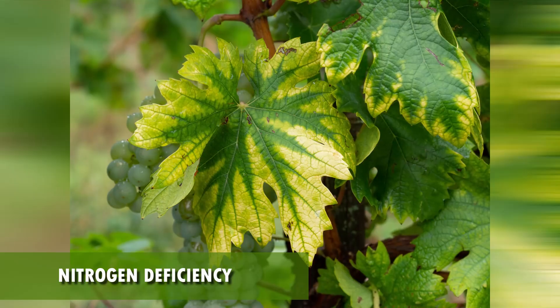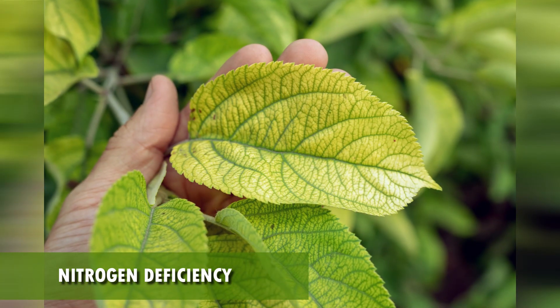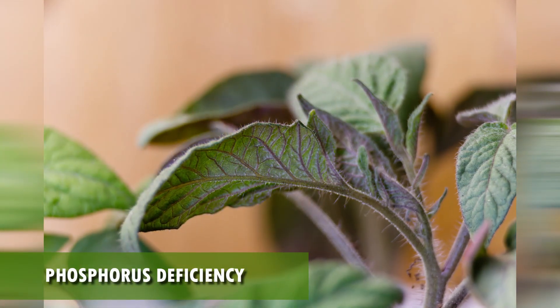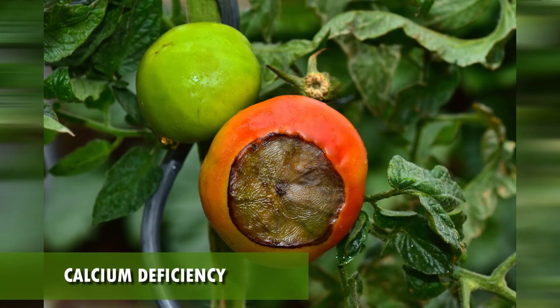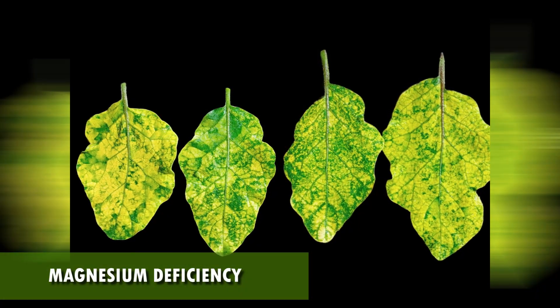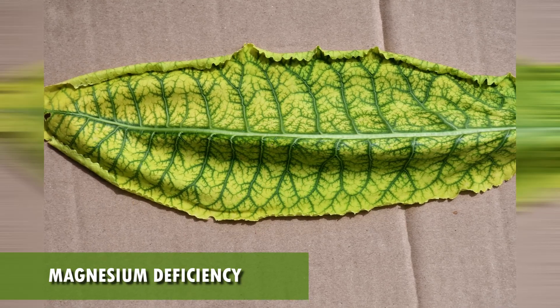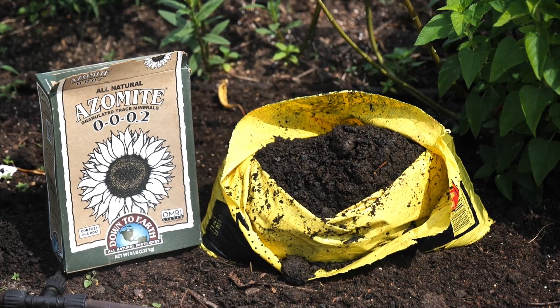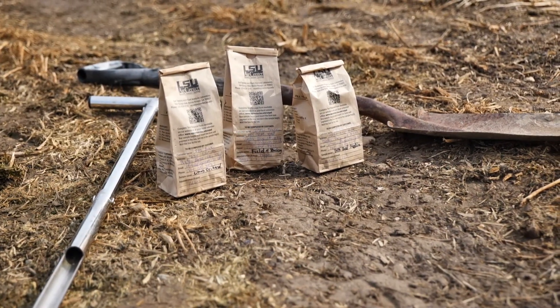Now, some common deficiencies we see in Louisiana gardens. Nitrogen deficiency looks like pale green or yellow leaves, especially the older ones down towards the lower part of the plant. Phosphorus deficiency shows as stunted growth and purplish stems. Calcium deficiency can look like blossom end rot on tomatoes or peppers. And magnesium deficiency looks like yellowing between the veins of older leaves. These are all fixable, but only if you know what your soil needs — which is why testing and targeted amendments are so important.